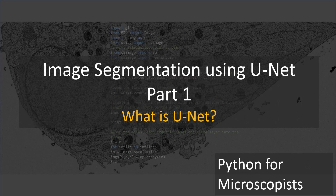Hey guys, you're watching Python Tutorials on my YouTube channel, Python for Microscopists. In the previous tutorial, I talked about malarial cell classification using convolutional neural networks. It was a classification problem where you can classify your images into one of many classes — either a parasitized malarial cell or a healthy malarial cell. So it was a classic classification problem.